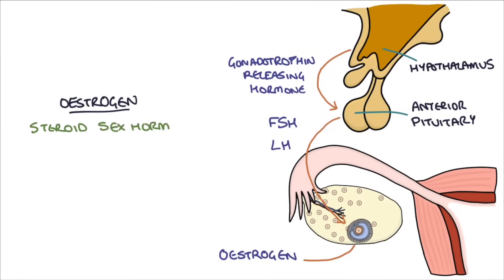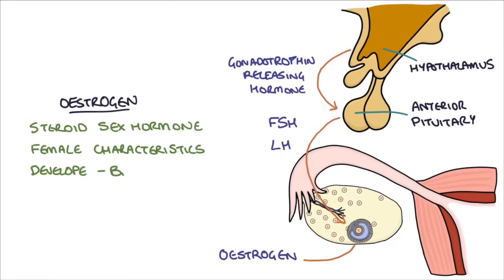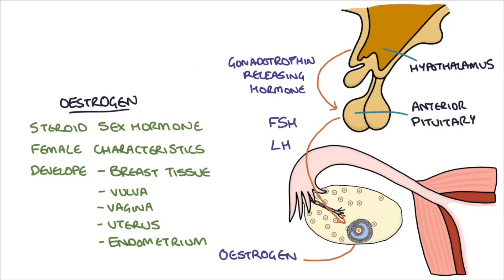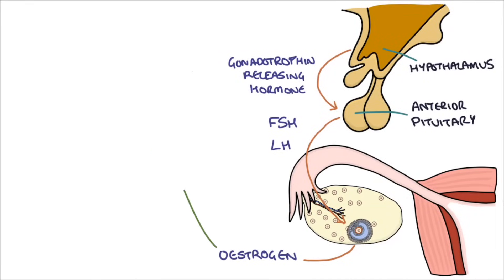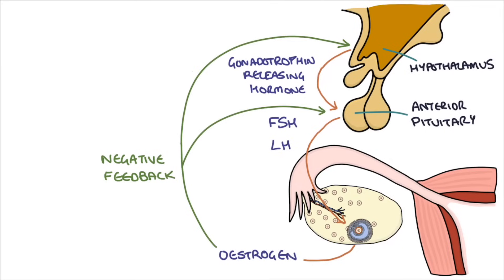Estrogen is a steroid sex hormone that acts on tissues with estrogen receptors to promote female secondary sexual characteristics. It stimulates the development of breast tissue and other female sex organs around puberty, such as the vulva, vagina, and uterus. It also stimulates the blood vessels in the uterus and the development of the endometrium, and causes the mucus in the cervix to become thinner so that sperm are able to penetrate it around the time of ovulation. Estrogen also causes negative feedback on the anterior pituitary and hypothalamus, so as estrogen rises, it suppresses the release of LH and FSH.